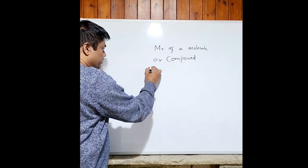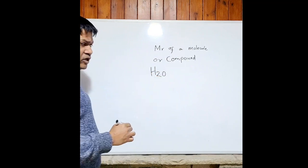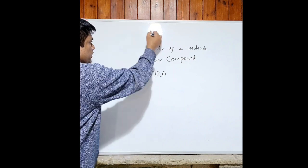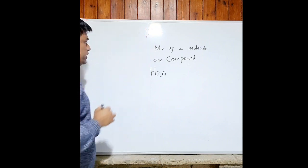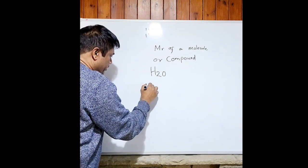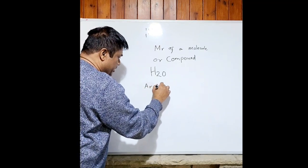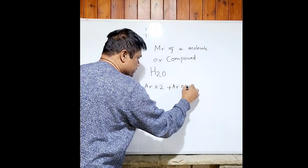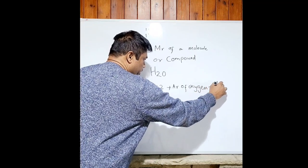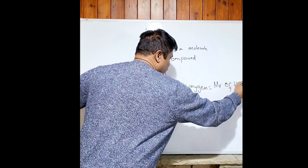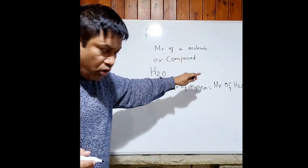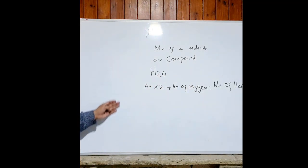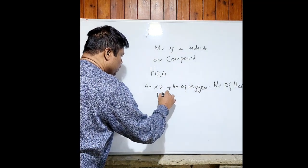Let's try an example. Take H2O, which is water. The AR of hydrogen is 1. So we do: AR of hydrogen times 2, plus AR of oxygen. That gives us the Mr of the water molecule H2O. We only use Mr or relative formula mass for compounds or molecules, and AR for monoatomic elements.